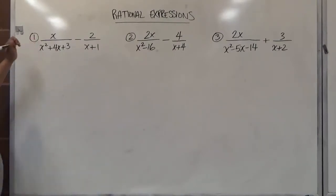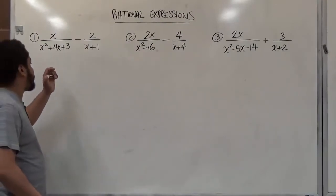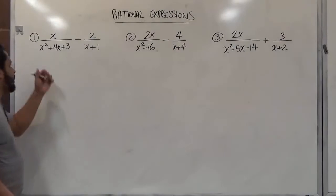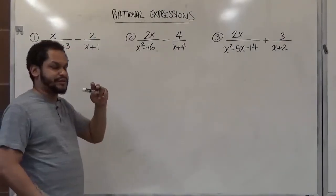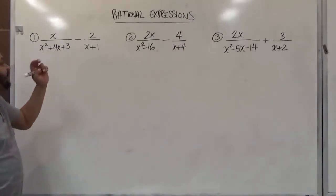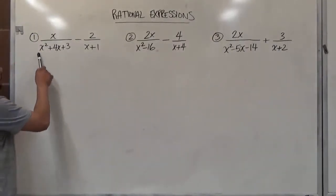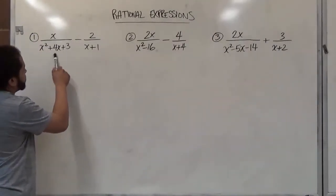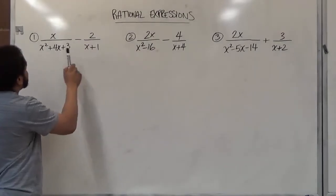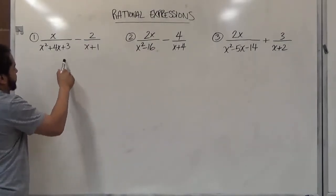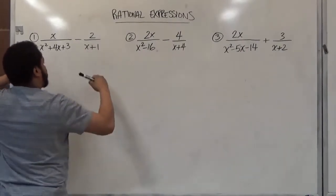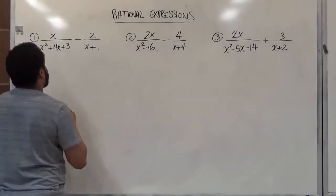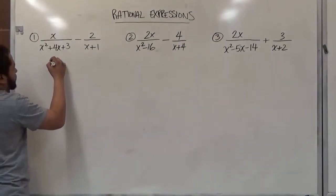The first problem is x over x squared plus four x plus three, minus two divided by x plus one. What we want to do is combine the two fractions into one, so we're going to need to find the LCD. We have a quadratic polynomial in one denominator and just a binomial in the other, so we'll need to factor the quadratic and find what's missing in the other denominator.